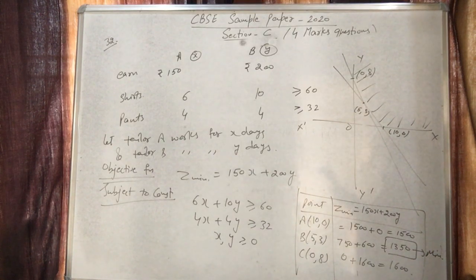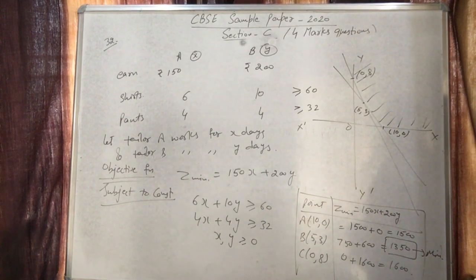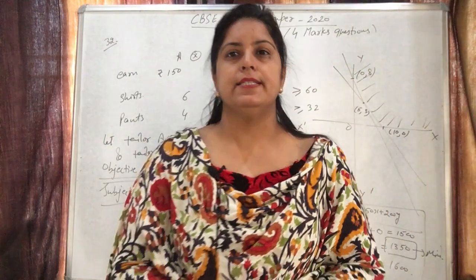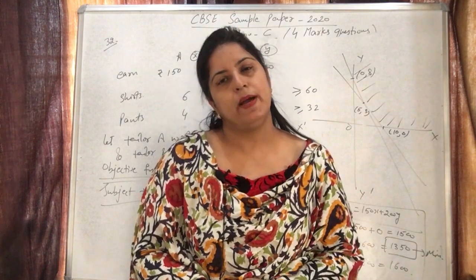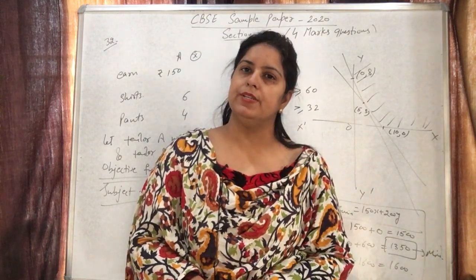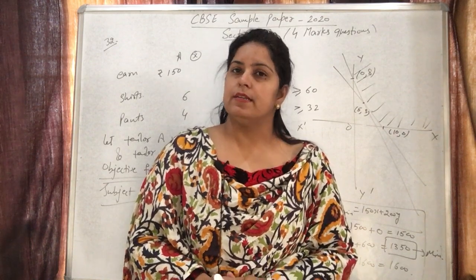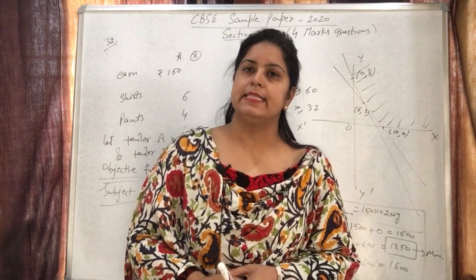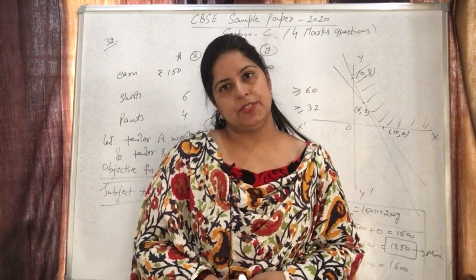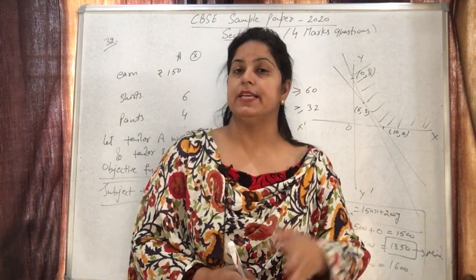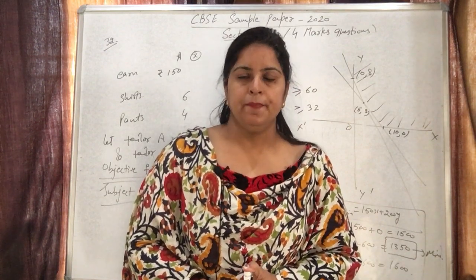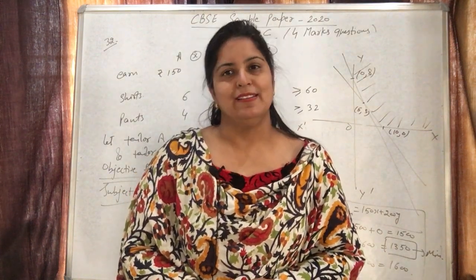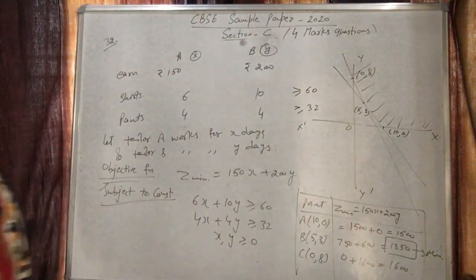The minimum cost is 1350 at the point (5,3). Therefore, the answer is: minimum cost is ₹1350 when tailor A works for 5 days and tailor B works for 3 days. That completes Section C of the CBSE Sample Paper 2020. In the next class we will cover Section B. Please like, share, and subscribe to the channel. Thank you.